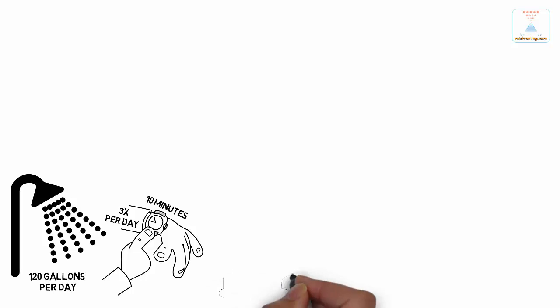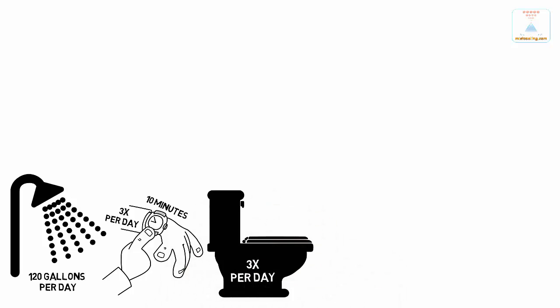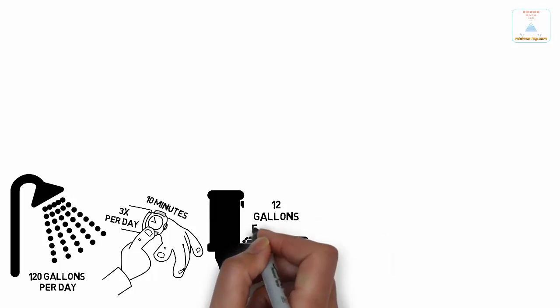If your toilet flushes three times a day, it goes down with approximately 12 gallons every day.